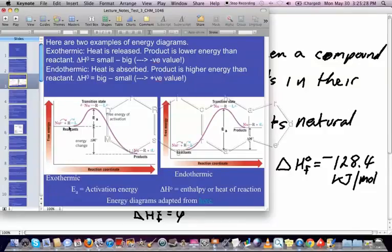We call this process an exothermic process when the products are lower energy than the reactants. And therefore, the delta H0 of the exothermic process will always be negative. So when energy gets released, we're looking at a negative value for delta H0.